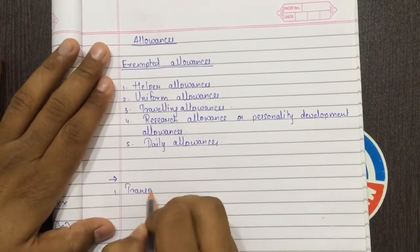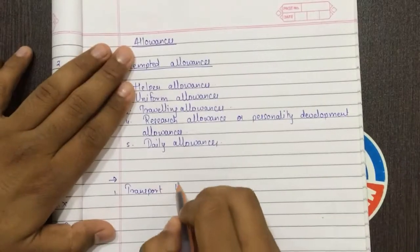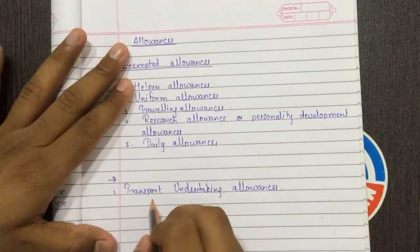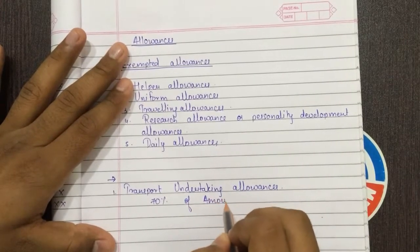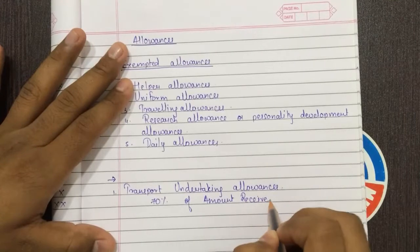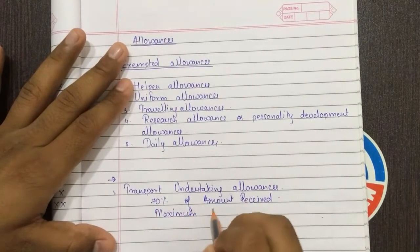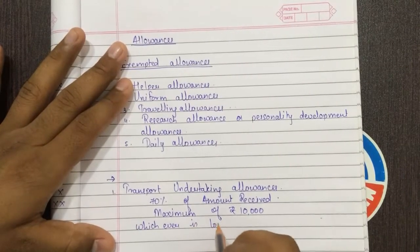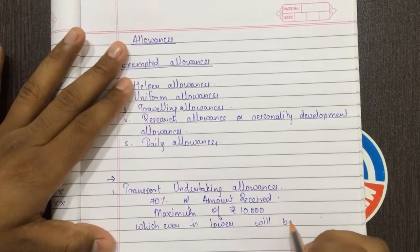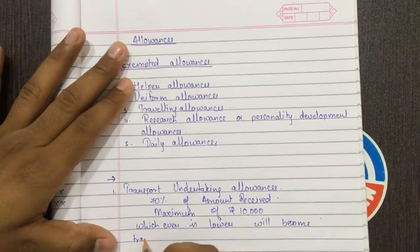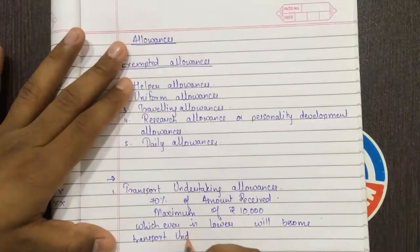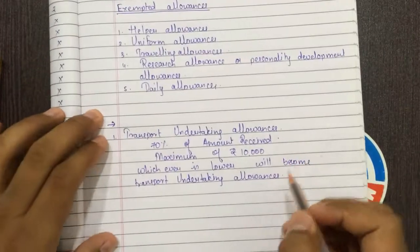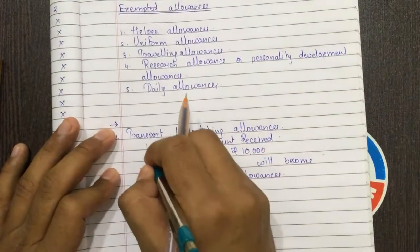Now a new part starts. Transport undertaking allowances: the exempt amount is 70% of the amount received or a maximum of ₹10,000, whichever is lower, will become the exempt transport undertaking allowances.